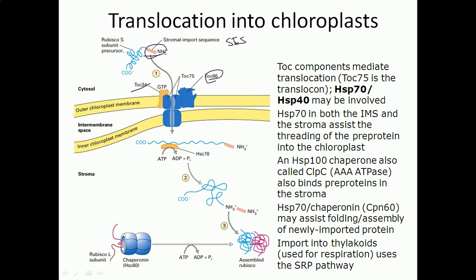So this is the small subunit of rubisco enzyme, and it is now having the stromatal import sequence. It will be guided through this TOC75 channel using ATP hydrolysis, because energy is required.